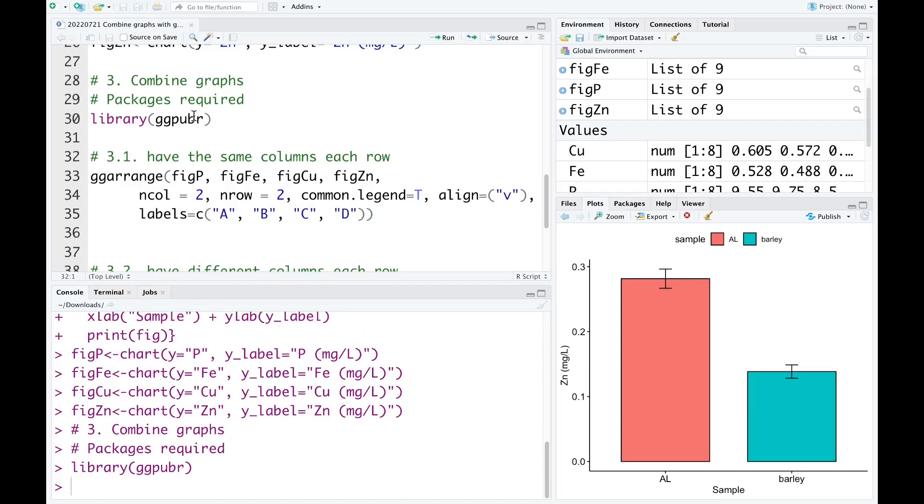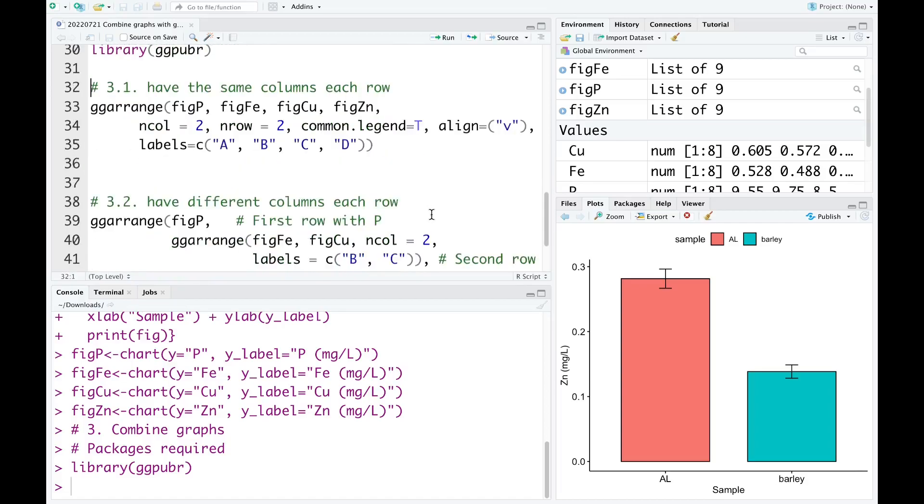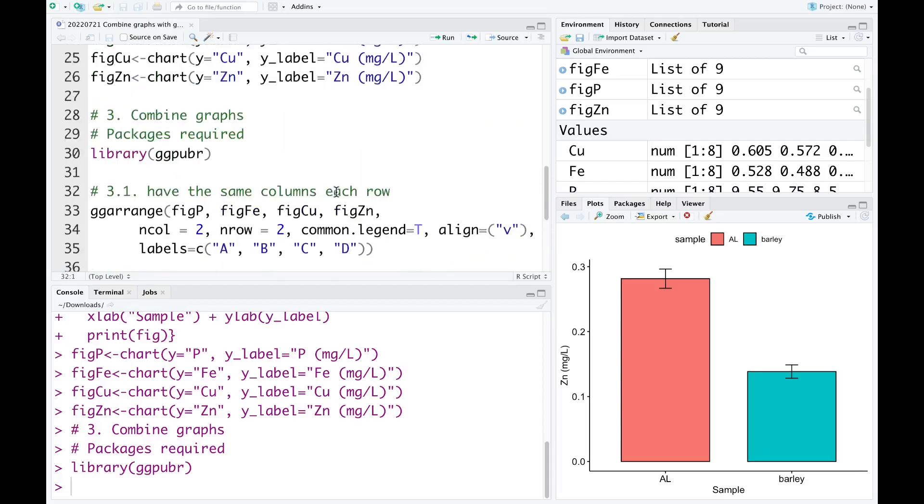There are two options when you want to combine the graphs. The first one, you want to have a figure that has the same number of columns each row. And the second one has a different number of columns each row. We're going to work with the first one first. To do this, we use ggarrange, and then we have the name of the figures we've already plotted above, including fig_P,